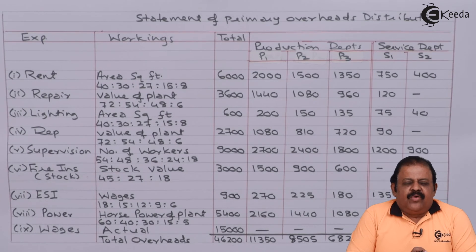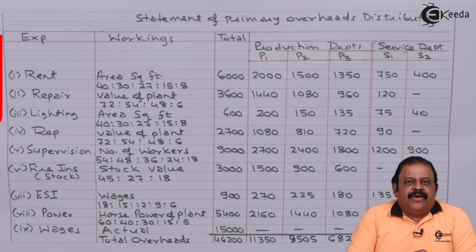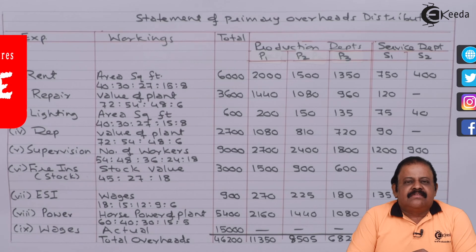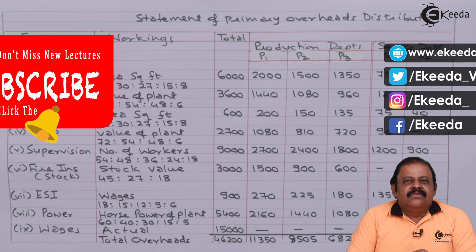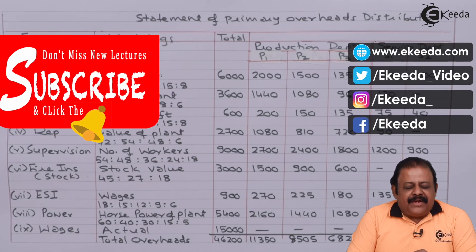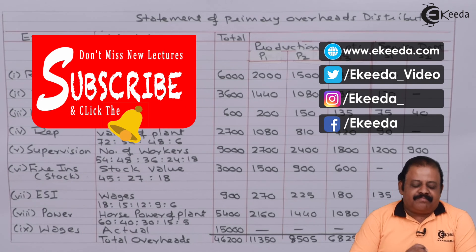Thus we have distributed overheads on certain parameters, which is called primary distribution of production overheads. Thanks for watching this video. Stay tuned with Ekida and subscribe to our channel Ekida. Thank you.